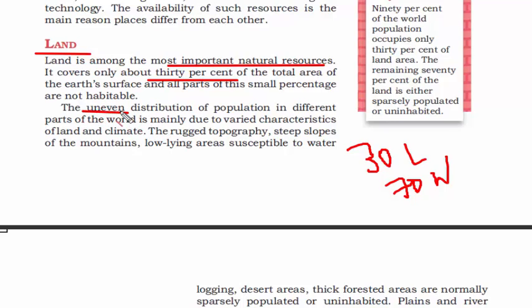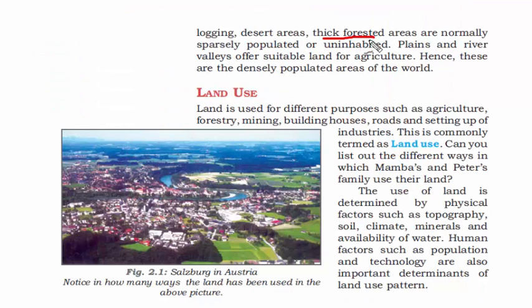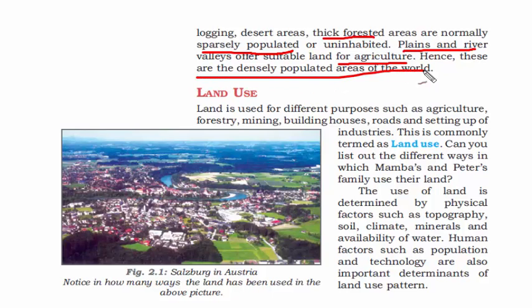Not every place is the same — we have mountains, plains, plateaus, fold mountains, and forest areas which are not much populated. Usually the plains and river valleys next to a river or a huge chunk of water have land suitable for agriculture, because of the soil carried by rivers. Where there is agriculture, there is food and businesses can take place. Therefore, these areas are the densely populated areas of the world.